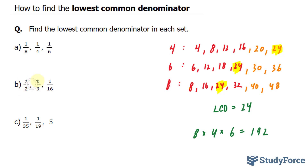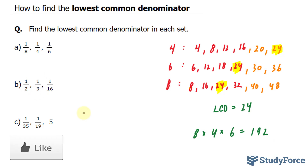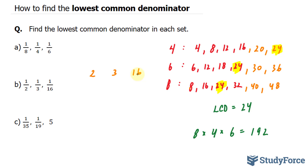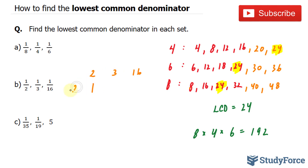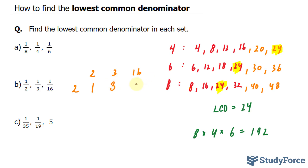In question B, we have 1 over 2, 1 over 3, and 1 over 16. For this example, I'll show you a different method and explain why I'm using it instead of the first one. This method involves writing out 2, 3, and 16, and starting with the smallest possible number that can divide into any of these, which is 2. I usually focus on even denominators first because 2 always divides them perfectly. So dividing by 2: 2 divided by 2 is 1; 3 divided by 2 gives 1.5, so we'll leave it as 3; and 16 divided by 2 is 8.